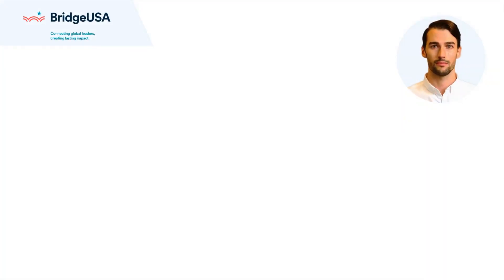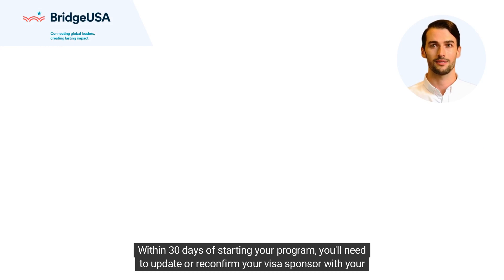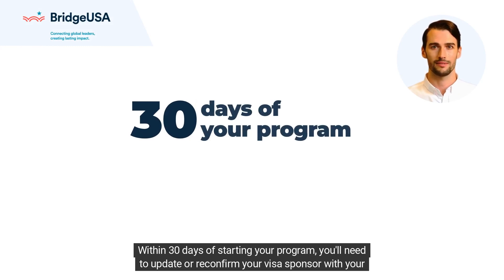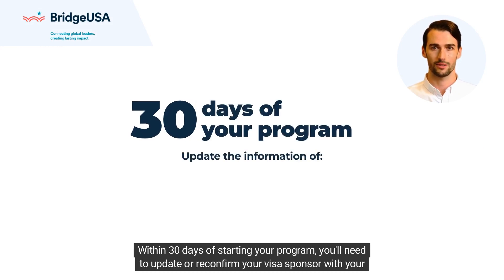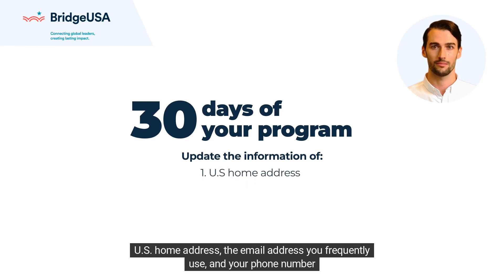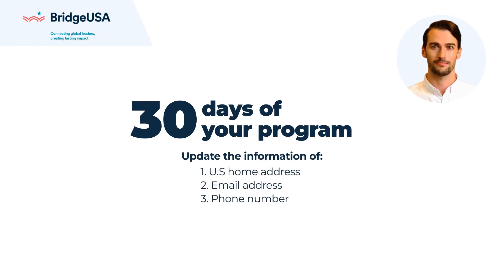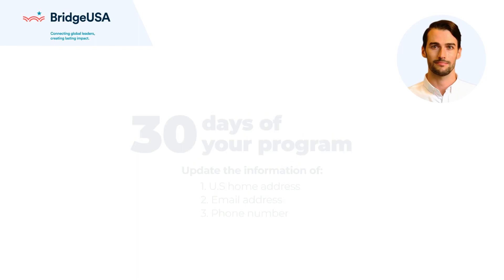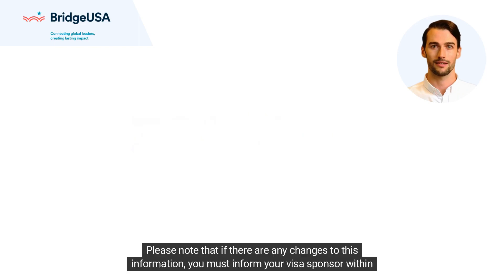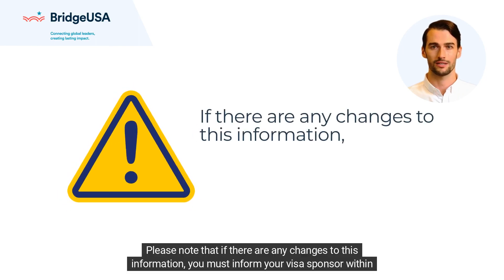Within 30 days of starting your program, you'll need to update or reconfirm with your visa sponsor your U.S. home address, the email address you frequently use, and your phone number.